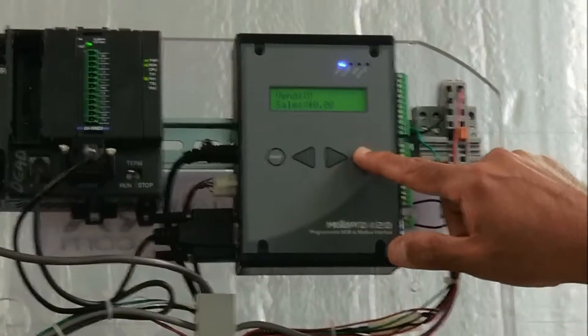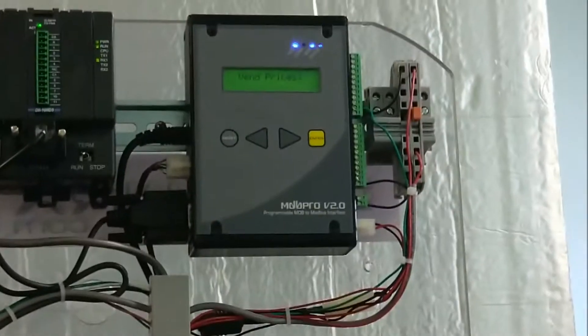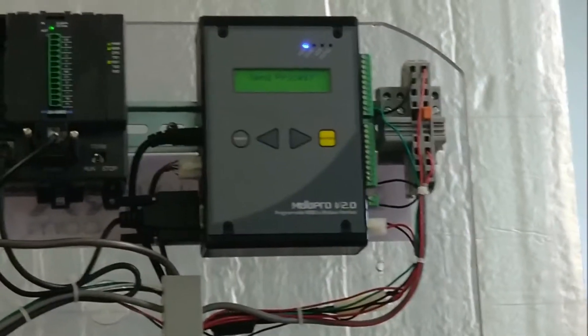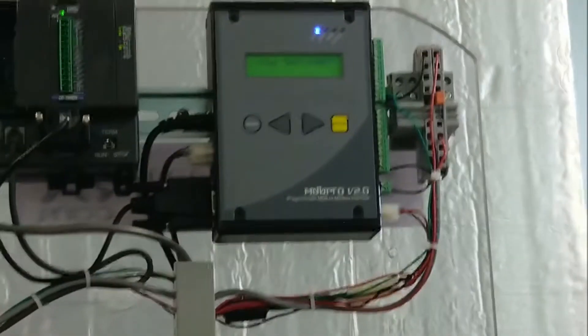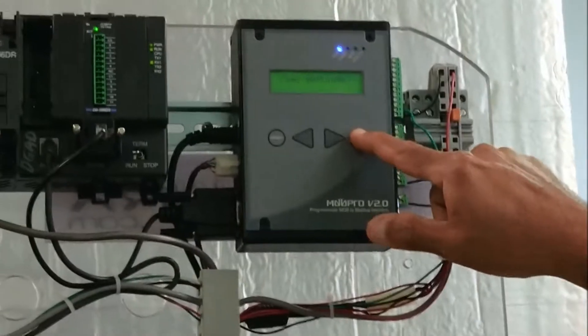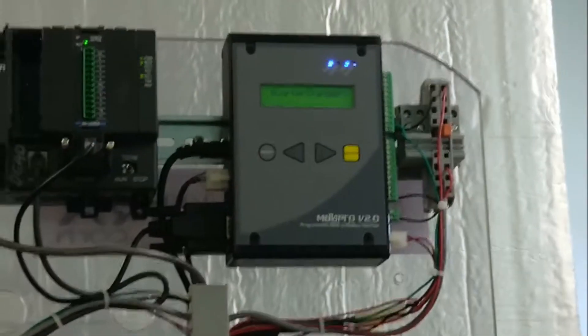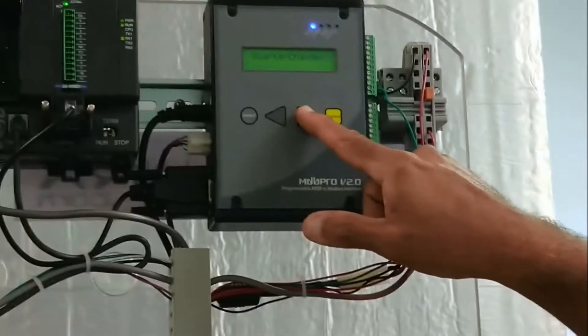We're going to come to the MDB Pro. We're going to press the yellow button. Just click it once, and it shows, goes into the menu. The first item in the menu is vend prices. We're going to go right to system settings. We're going to press the enter button to enter system settings, and we're going to go through the options in the menu.